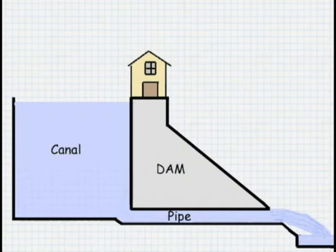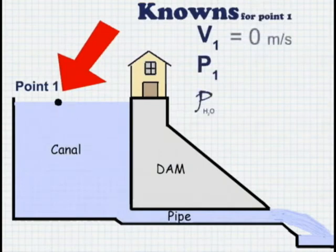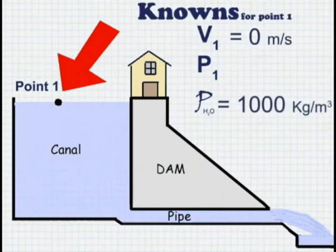We also want to make sure the points we pick give us useful information to work with. If we pick our first point to be at the surface of the water behind the dam, we will already know velocity, static pressure, and density. The velocity is zero because the surface of the water isn't moving. And the density of water is constant. The static pressure at point one is standard atmospheric pressure because we are close to sea level.